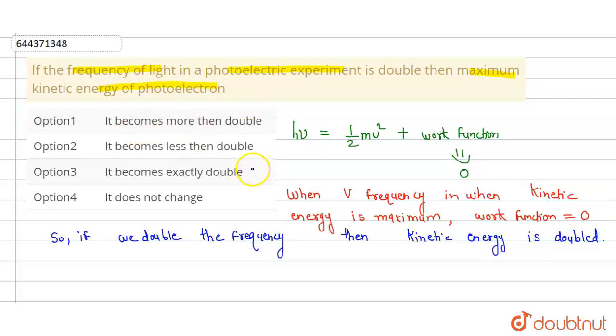So we can say that option third one is the right one, because it becomes exactly double. Thank you.